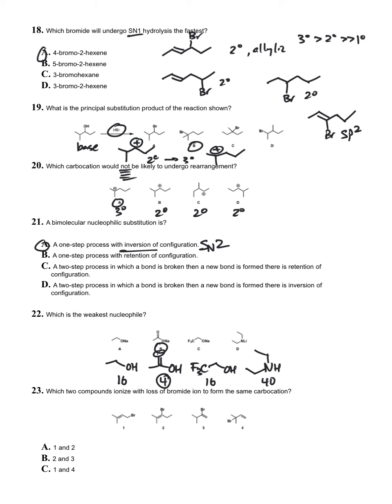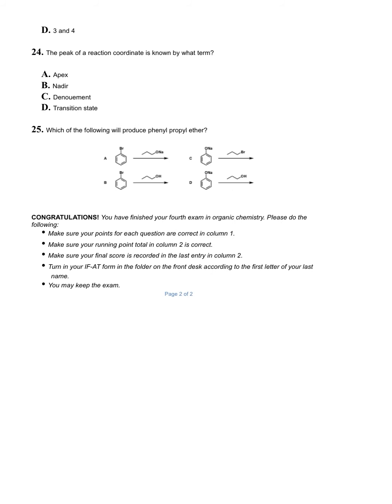Question twenty-three: which two compounds ionize with loss of bromine to form the same carbocation? When we're looking at 2 and 3, those are both bonded to sp2 hybridized carbons, so they're out. So 1 and 4 is the correct answer. Question twenty-four: the peak of a reaction coordinate is known as the transition state. That's the peak, that's the transition state.